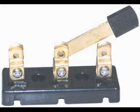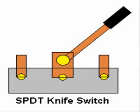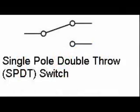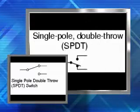This knife switch has a single pole or single moving contact and two throws or two contact positions. It is called a single pole double throw, or SPDT switch. This is the symbol for a single pole double throw or SPDT switch. Here it is drawn a little differently.